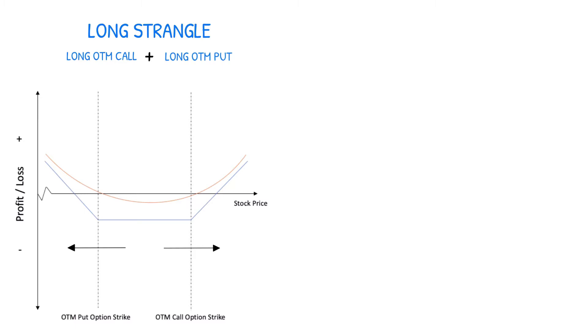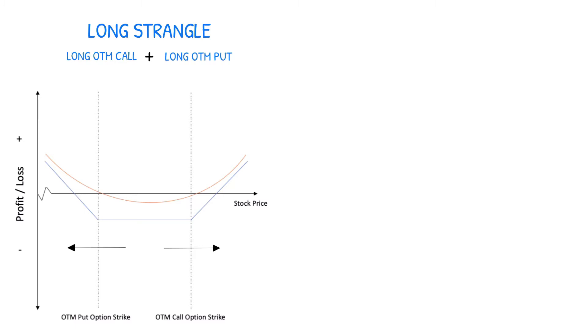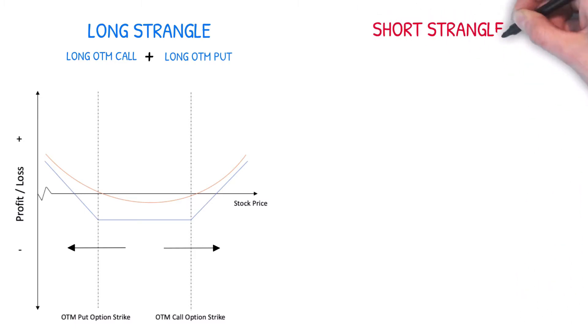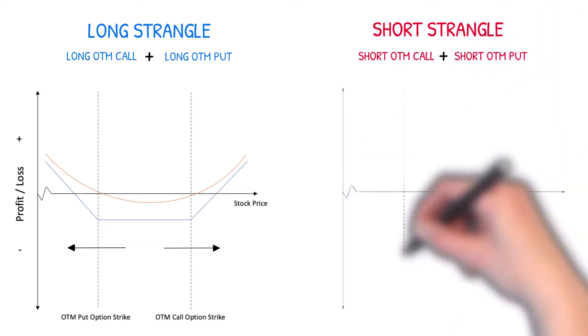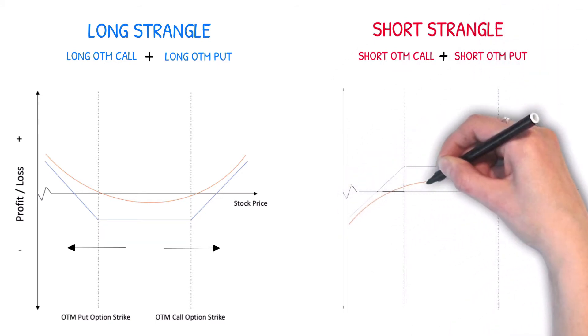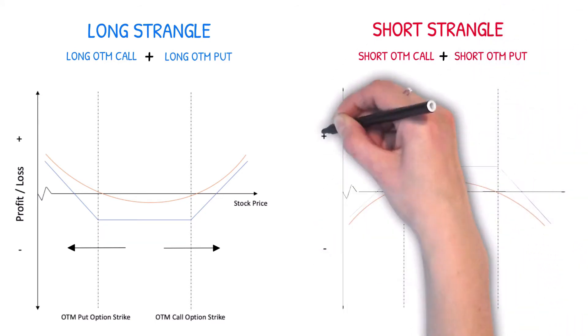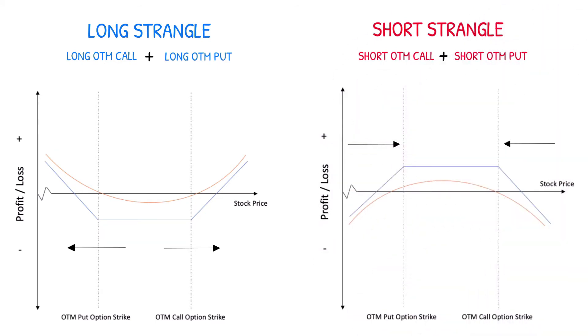This is why long strangles have a lower probability of profit than long straddles. The opposite is true for a short strangle — a short strangle is a price neutral strategy that benefits when the range in which a stock trades is contained between the short call and put option strikes.